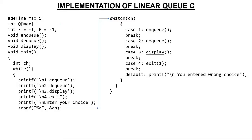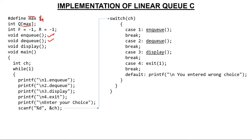This is a menu-driven program. First of all, I've created a macro of size 4, and then created an array named Q of size 4, with indexes from 0 to 3. Since the queue is empty initially, I've created two global variables: front (F) and rear (R), both initialized to minus 1. If the queue is empty, front and rear both hold minus 1. We also have prototypes for three functions: enqueue, dequeue, and display.